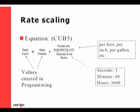Our equation for determining the rate input is: rate display times pulses per engineering unit, over desired time factor. When we are programming our rate meter, the rate input value and the rate display value are entered. The rate display, or desired reading, should be set at the fastest rated speed for your application. Our time factor is used to determine what scale we are measuring at — it can be in seconds, minutes, hours, or so on. If our time factor were in seconds, you would use a 1; per minute, you would use a 60; and per hour, you would use 3600.